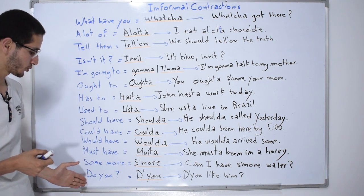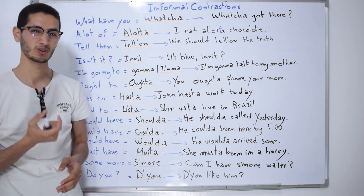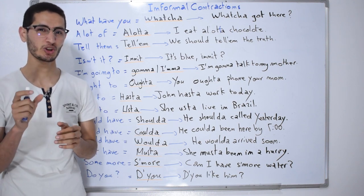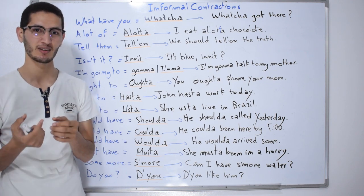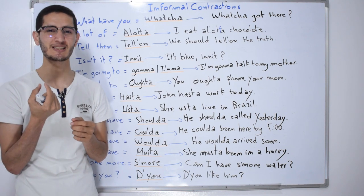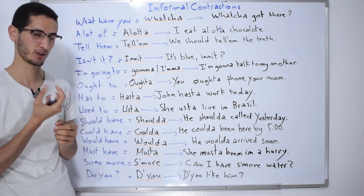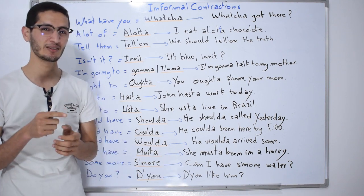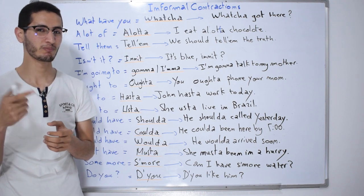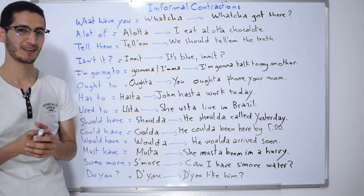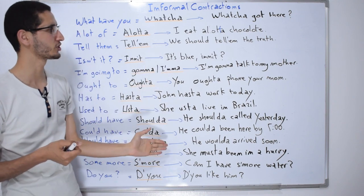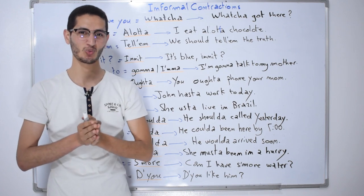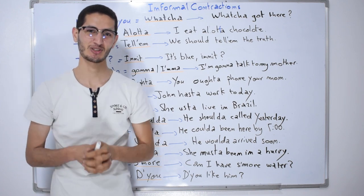The last contraction is 'do you,' which becomes 'd'ya.' American speakers would usually say 'D'ya like going there?' or 'D'ya like him?' — it's like a D sound, plus a small G sound before the U. So: 'D'ya like him?' These informal contractions help us sound more natural and fluent, just like native speakers. See you next time — take care!